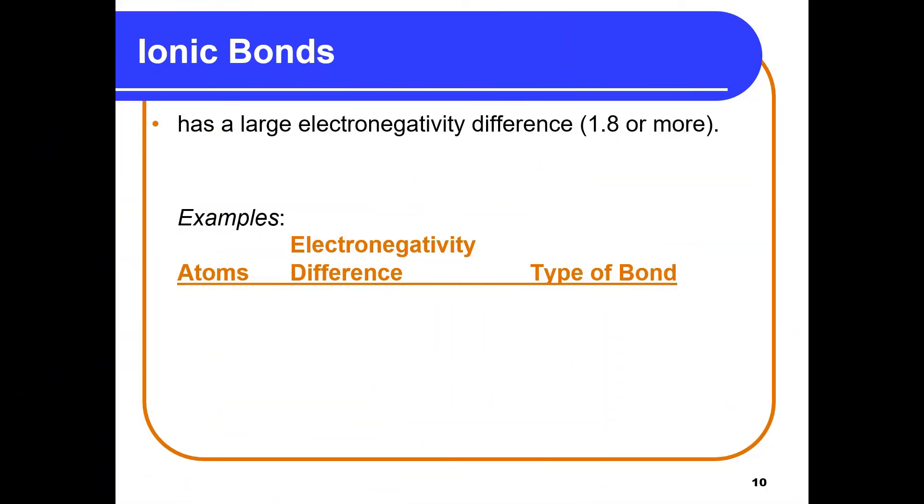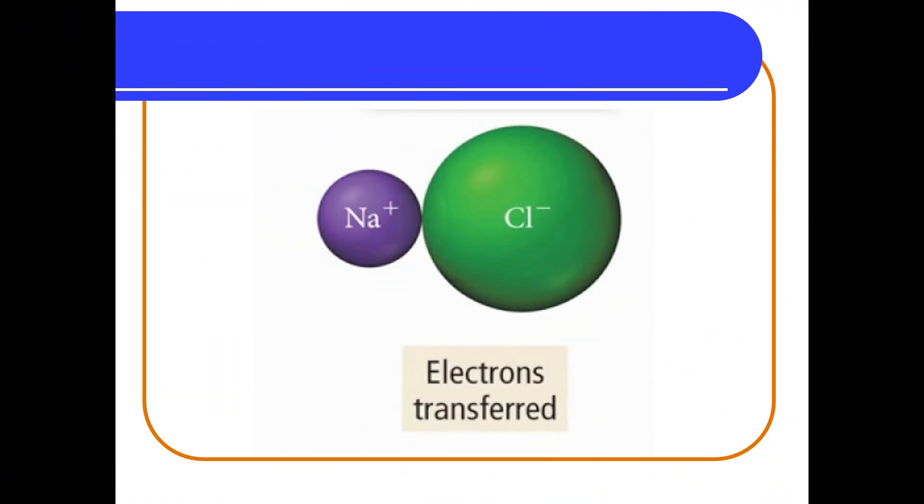Lastly, an electronegativity difference of 1.8 or more gives us ionic bonding. We have an example of fluorine and potassium, nitrogen bonded with sodium, and sulfur bonding with cesium gives us ionic bonds.